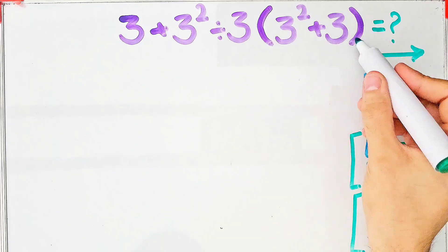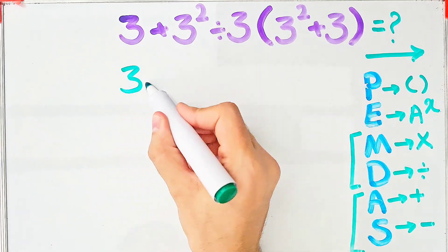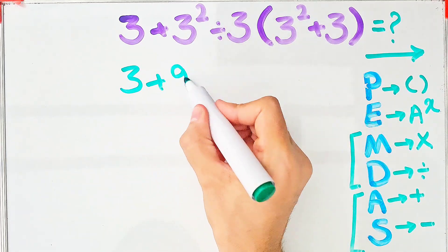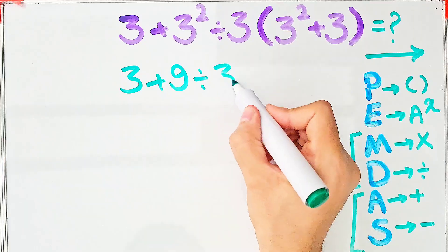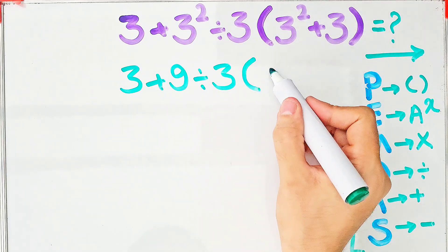first we simplify the parentheses. We have 3 plus 9 then divided by 3, then times 3 to the power of 2 that equals 9 plus 3.